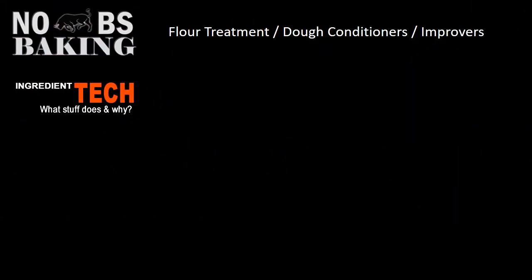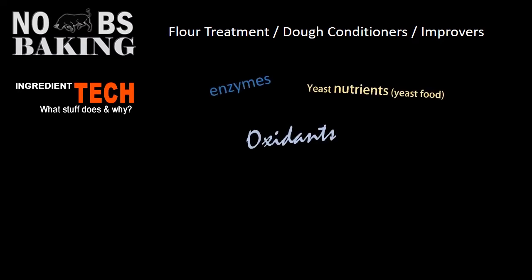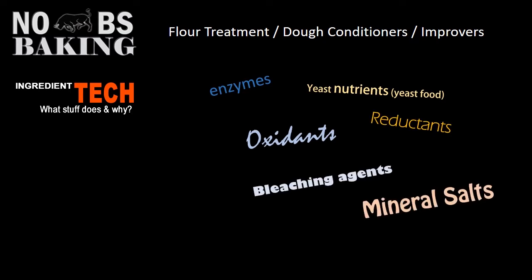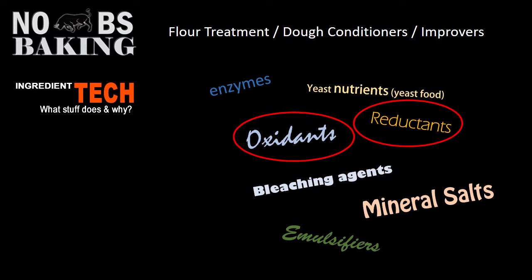Flour treatment, dough conditioner, improving agent, bread improver — these are generally defined as any ingredient or chemical added to flour or bread dough to improve it in some way. Dough conditioners may include enzymes, yeast nutrients, oxidants, reductants, bleaching agents, mineral salts, and emulsifiers. These are food additives designed to improve baking functionality, processing considerations, and overall baking performance. In this video we will cover oxidation and reduction with a focus on a few of the more natural products you can use to improve your baked products.